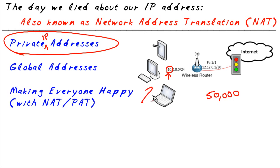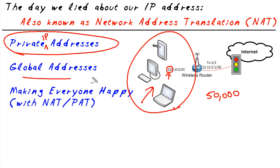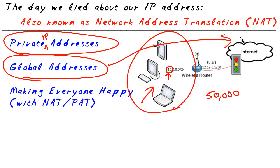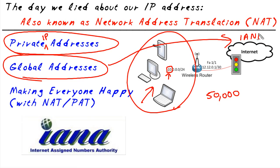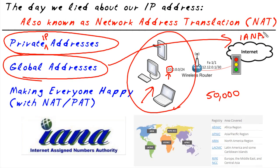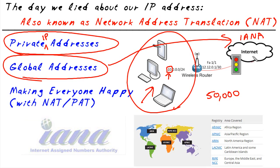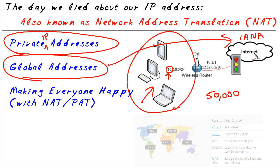Those private addresses are isolated and not allowed on the internet. So they can use the 10 network in their own company, but they can't use it on the internet. The internet uses global addresses, and global addresses are all handed out by the IANA — the Internet Assigned Number Authority — through local registries based on the part of the world you live in, and all global addresses are managed by the service providers.